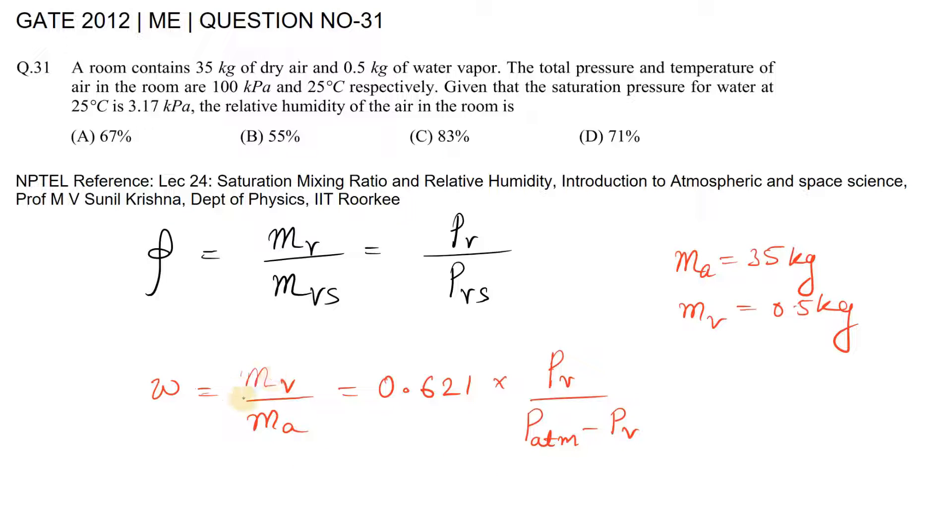Now mv and ma are given in the problem, so let's substitute: 35 upon 0.5 equals 0.621 multiplied by Pv, which we need to find, over atmospheric pressure 100 kilopascals minus Pv. Using a calculator, we get Pv equals 2.253 kilopascals.